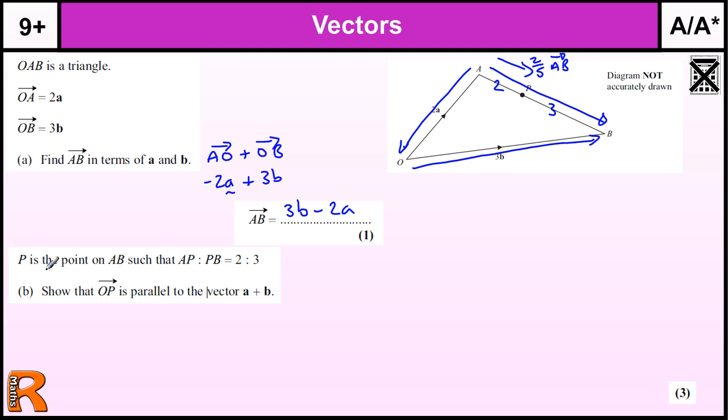So to work out the vector OP, from O to P, that's the composite of going from O to A. Let's use a different colour, let's use green. So if we're going from O to P, that's the combined vector. We're going from O to A, followed by A to P. O to A followed by plus A to P.